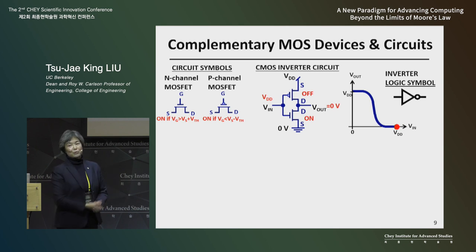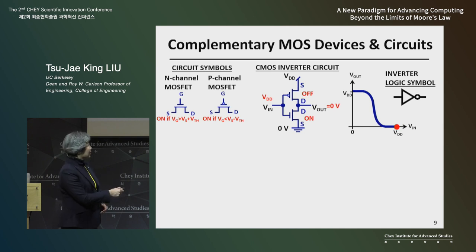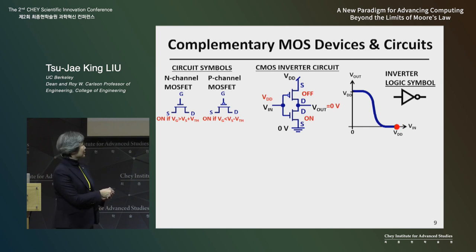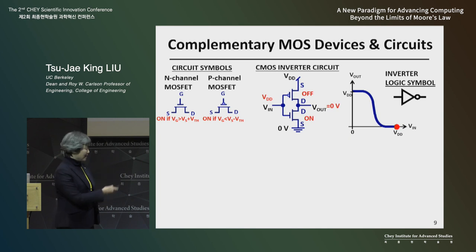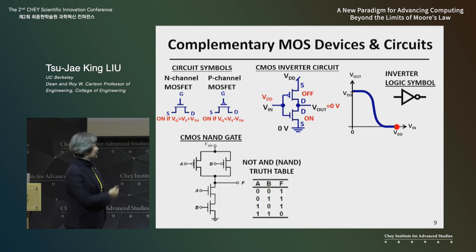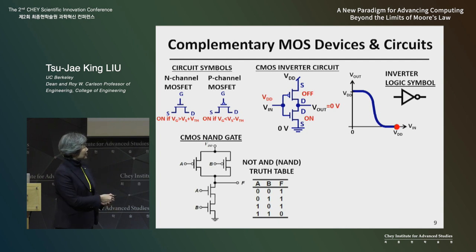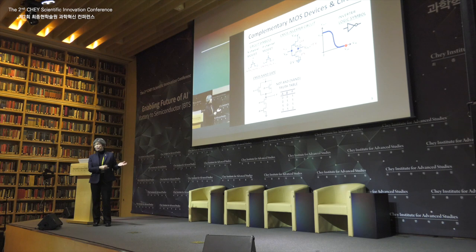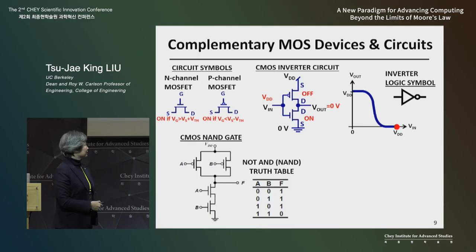Now notice here, the P-channel device is off because the gate-to-source voltage difference is zero. This is the way a basic circuit works, and this is the symbol for this inverter: if the input is low, the output is high; if the input is high, the output is low.